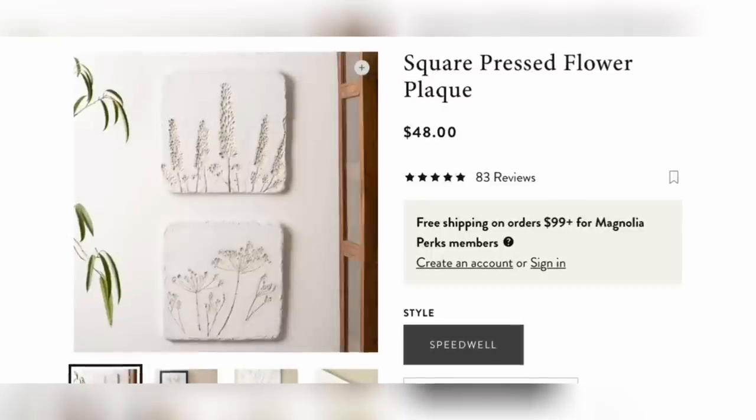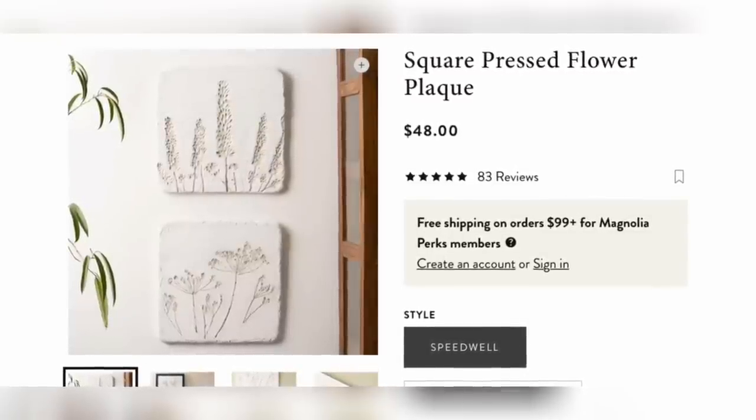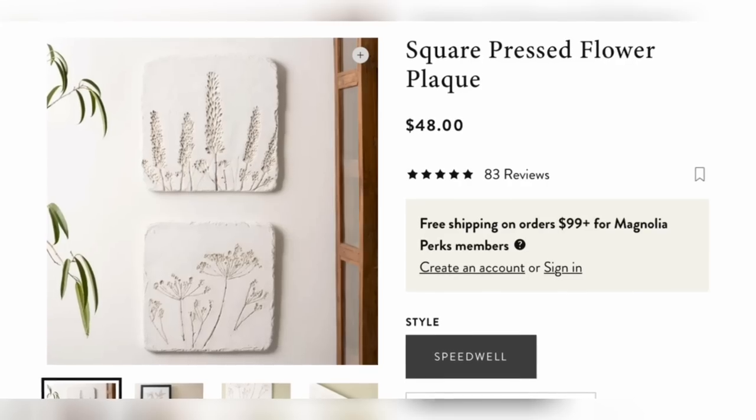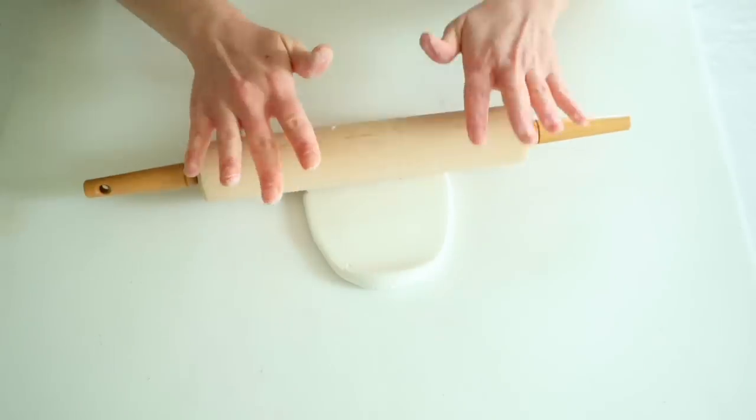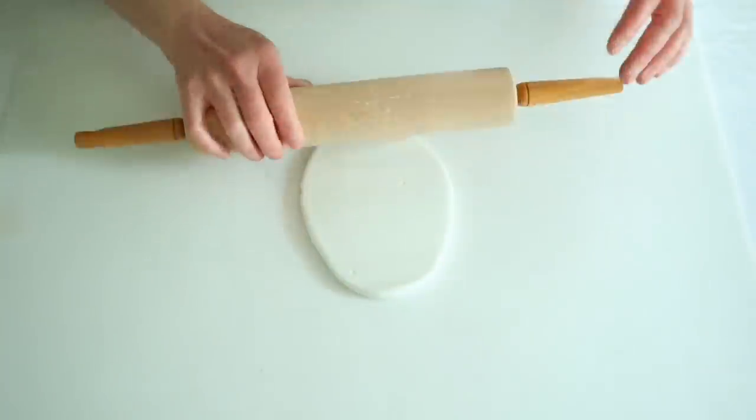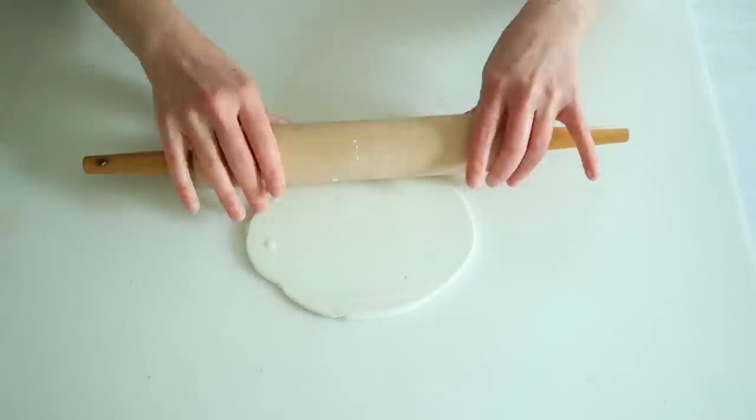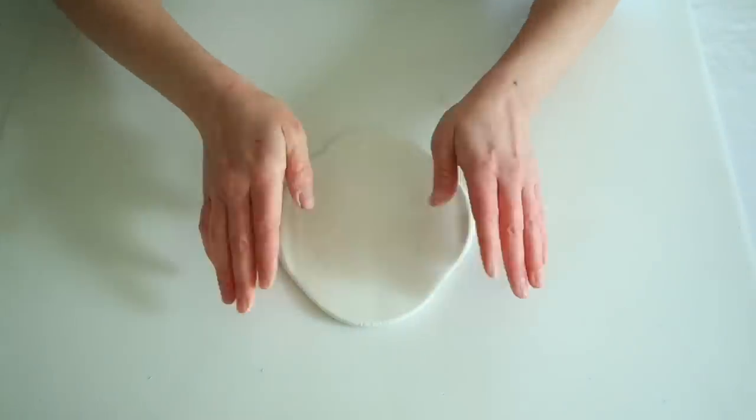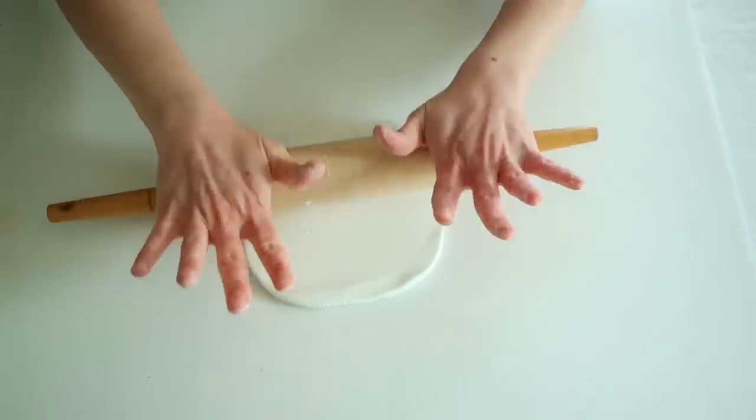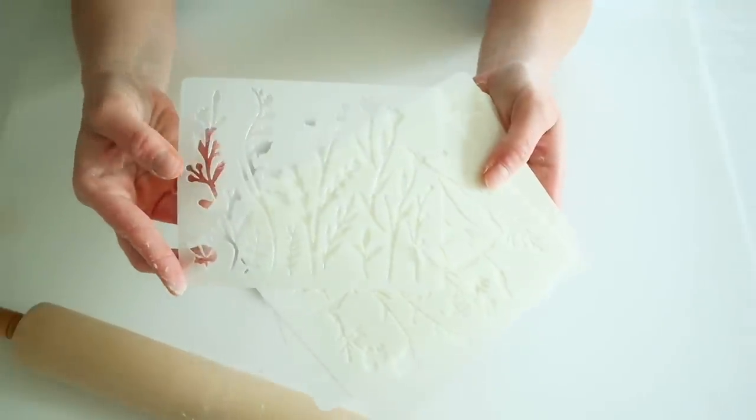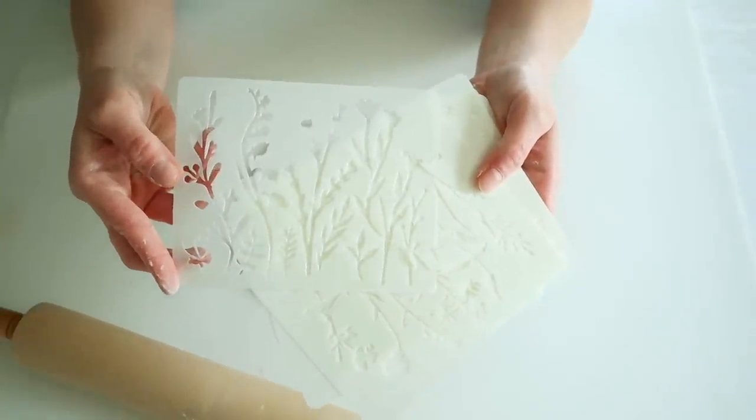This first project is inspired by the square pressed flower plaques from Magnolia, but I am going to be doing the reverse for this. So I'm going to grab a chunk of my air-dry clay, roll that around, warm it up, and then roll it out with my rolling pin. I'm making a square version. There's also a rectangle version, but for this one, I wanted to use the stencils that I got from Amazon.